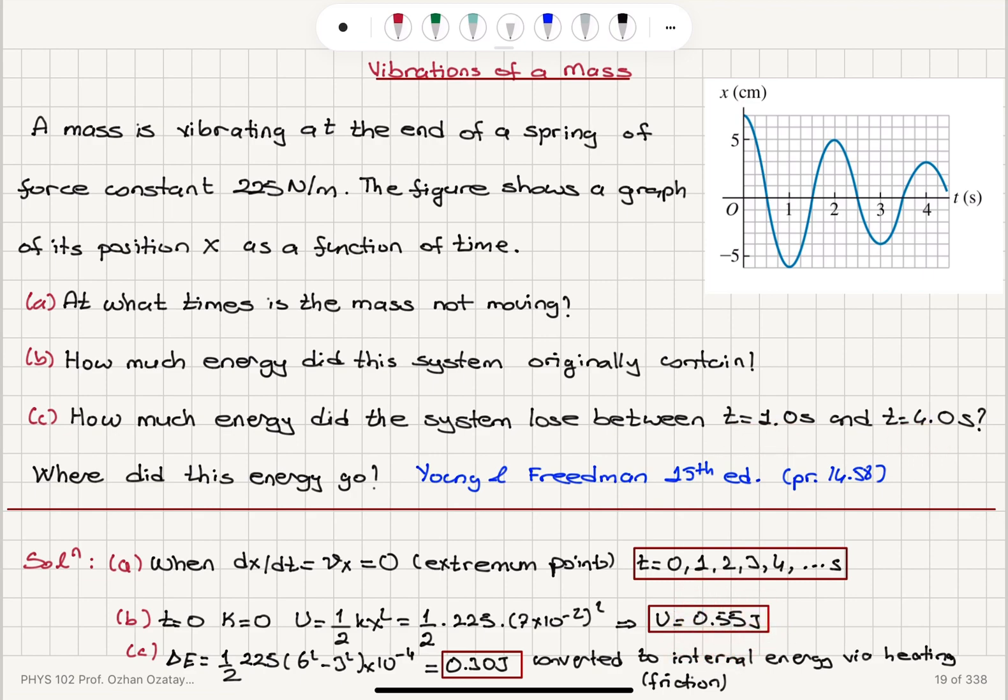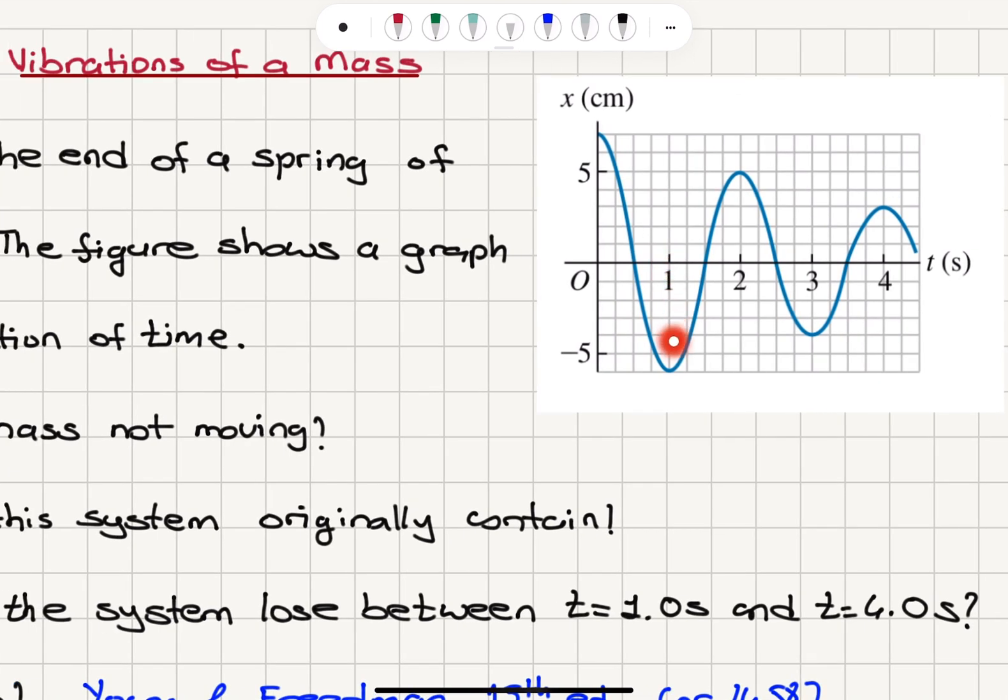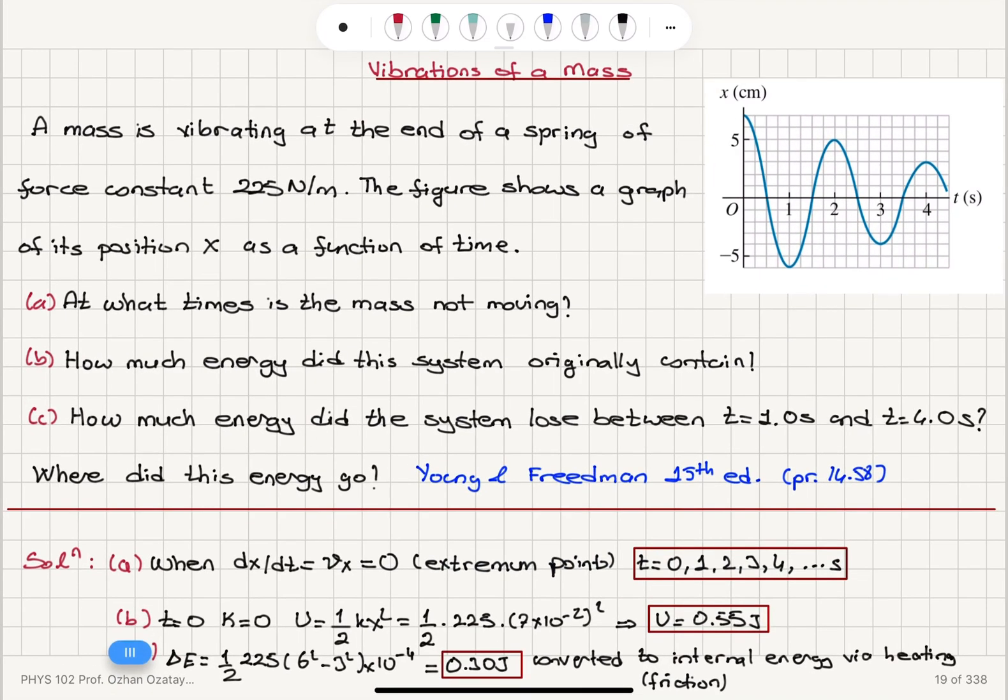Between t equals one and four seconds, we have t equals one, one half k times six squared, and t equals four, one half k times three squared, times 10 to minus four. We have the total change in energy, 0.30 joules. This energy has been lost. So for example, it's converted to internal energy via heating if this is a friction effect. So if the damping is due to friction, this is where the energy would go.